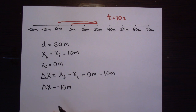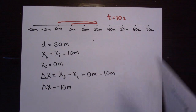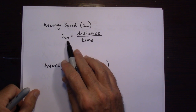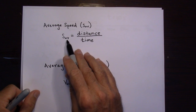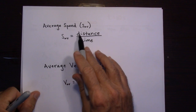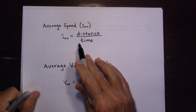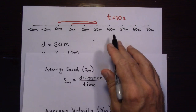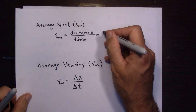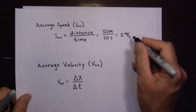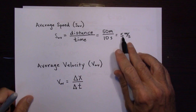Average speed is the distance the object travels divided by the time it took to travel that distance. Using our example, the object went 50 meters in 10 seconds, so the average speed is 50 meters divided by 10 seconds, which equals 5 meters per second. On average, it was going 5 meters every second.